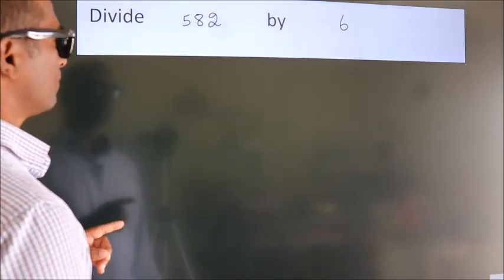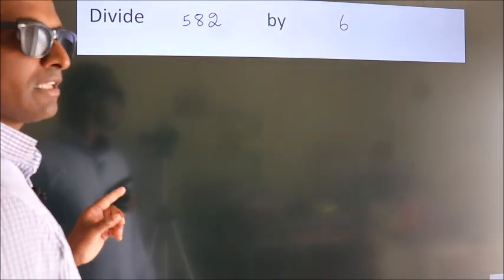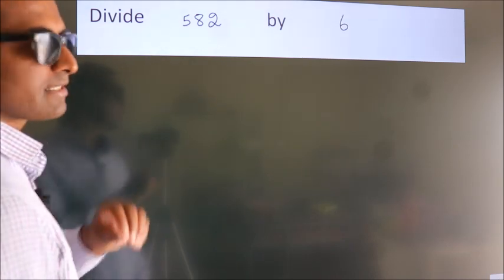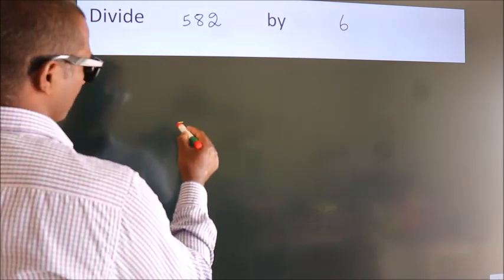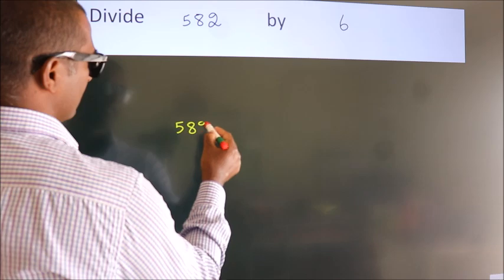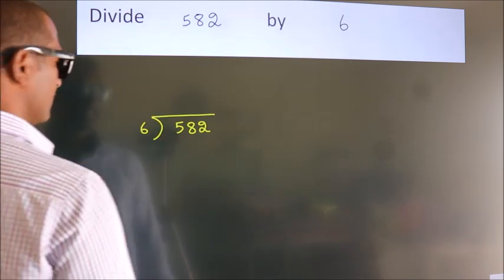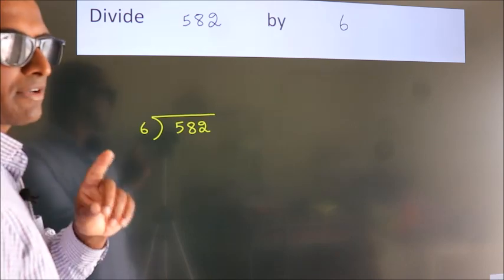Divide 582 by 6. To do this division we should frame it in this way: 582 here, 6 here. This is your step 1.